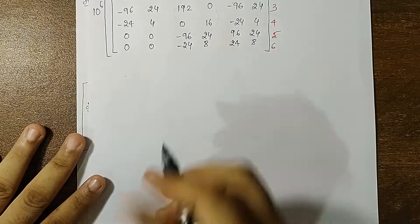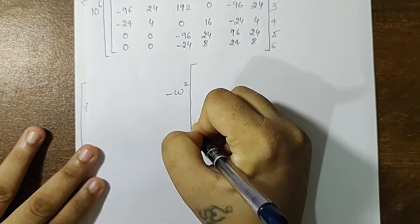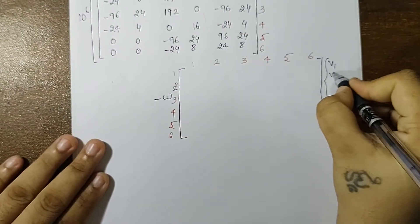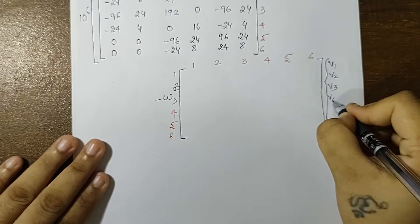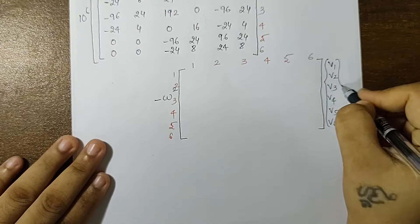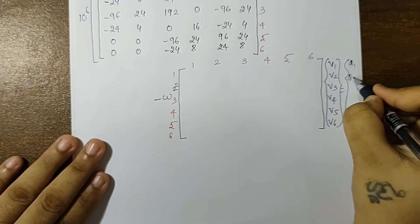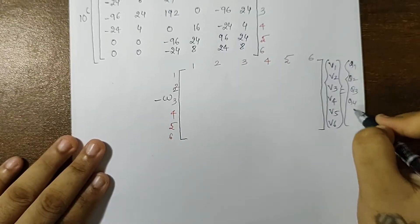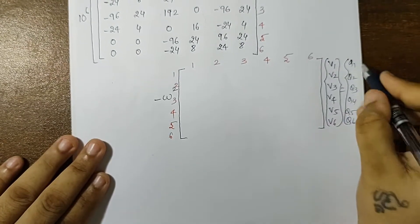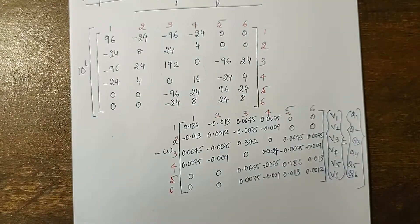Next I have minus omega square as a common term and again I will have a 6 by 6 matrix. And here I have V1, V2, V3, V4, V5, V6 is equal to Q1, Q2, Q3, Q4, Q5, Q6. So let's place these values now. This is my GME obtained.